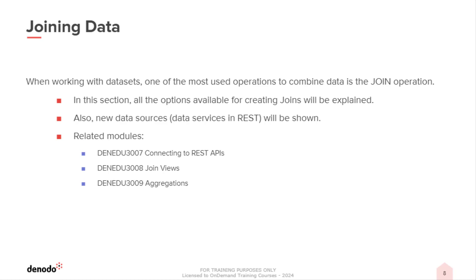The following modules are also included in this course. Connecting to REST APIs — REST API data services typically use common data formats to interchange data. You can connect, for example, to Google services like G Drive, or Twitter through this data source. Join views — the most important operation is the join operation, where all the different types of joins and execution methods will be explained. Aggregations — we will also see when and how aggregation functions can be leveraged in the Denodo platform.